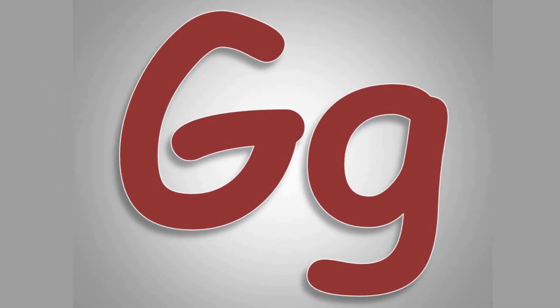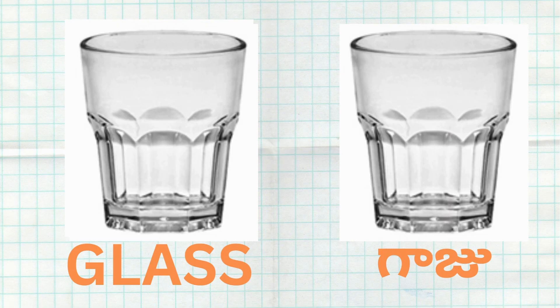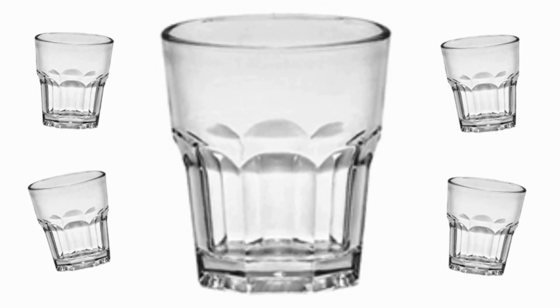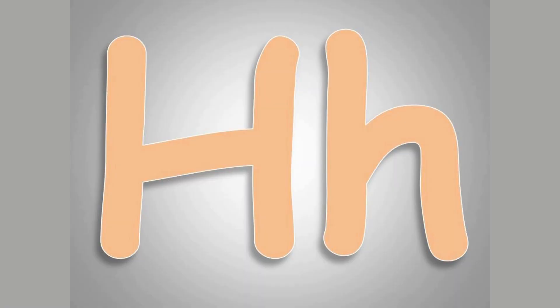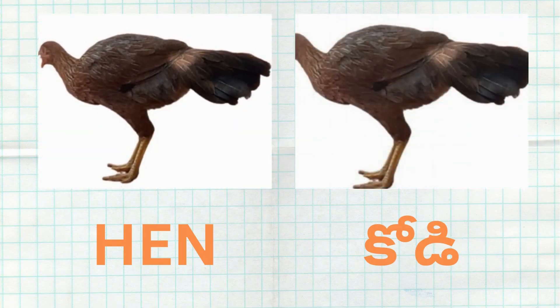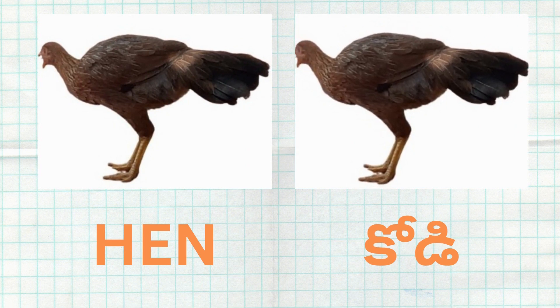G for Glass. Glass Ante Gaju. H for Hen. Hen Ante Kodi.